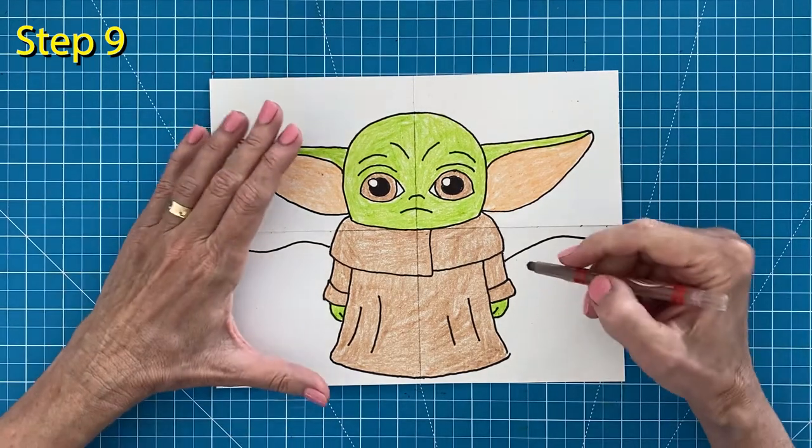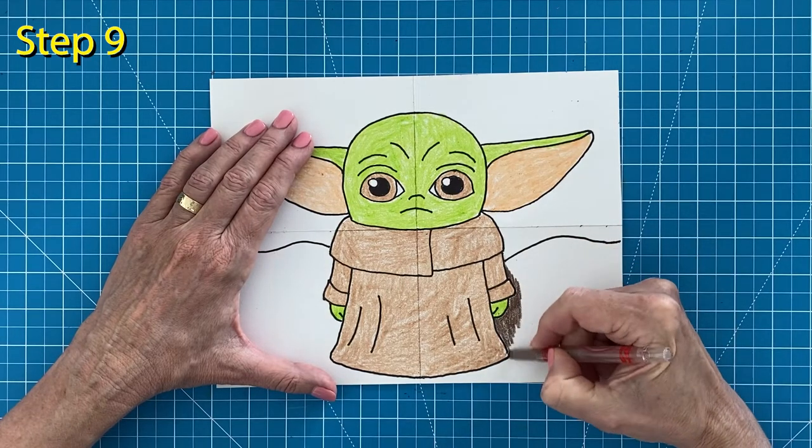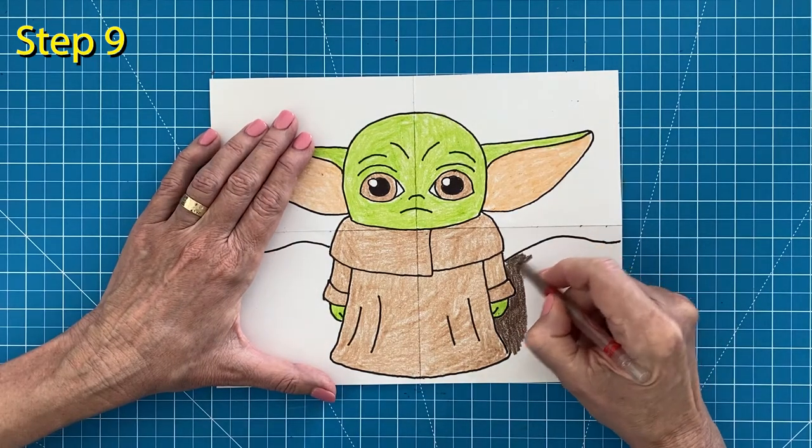Now a dark brown crayon for the background. Pressing hard will make it contrast nicely from Baby Yoda's light brown robe.